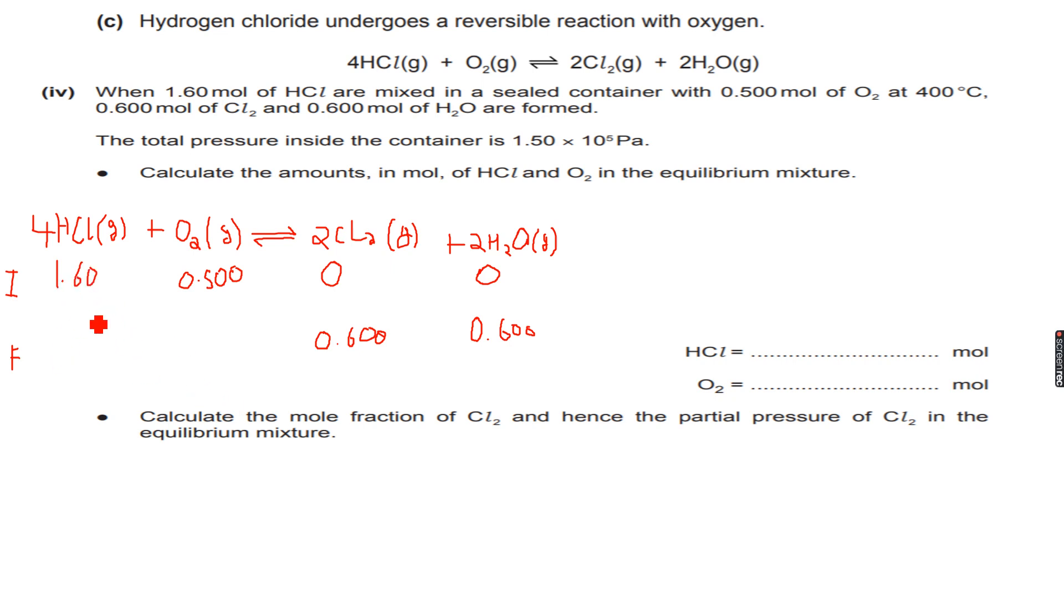If 1.2 moles of HCl reacted, then 0.4 moles of HCl will be left, because obviously 1.2 moles had reacted. So 1.60 minus 1.20 is 0.4, so I have 0.4 moles of HCl left. Now similarly...